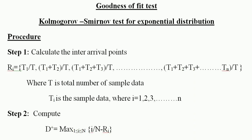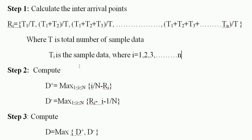The inter-arrival points ri are calculated as: r1 = t1/T, r2 = (t1 + t2)/T, r3 = (t1 + t2 + t3)/T, and the last one is (t1 + t2 + ... + tn)/T, where T is the total sum of all sample data, and ti is the sample data for i = 1, 2, 3, ..., n.